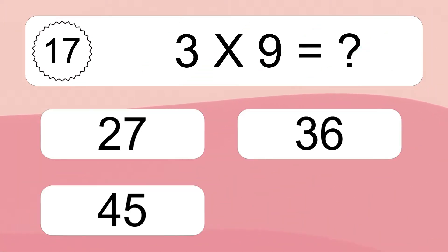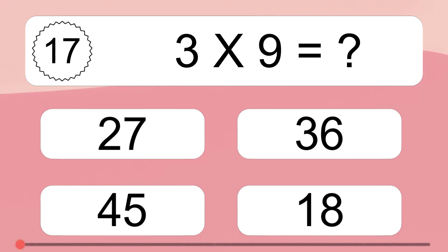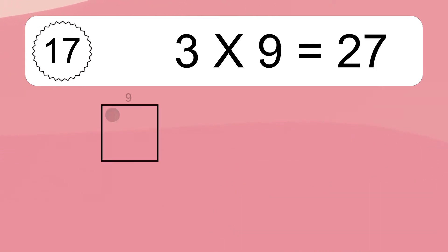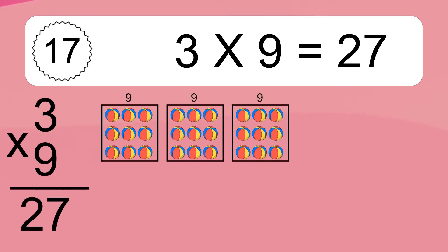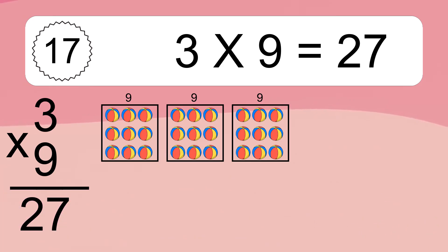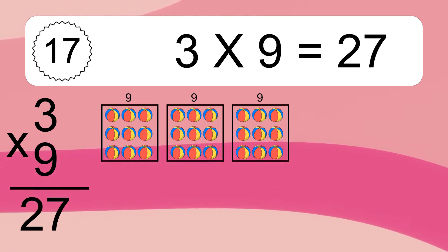3 times 9 equals what? 3 times 9 equals 27. We have 3 boxes, and each box has 9 colorful balls inside. If you count all the balls in all the boxes together, you will have 3 times 9 balls. This equals 27 balls.